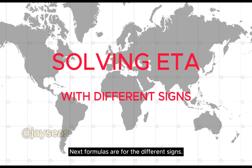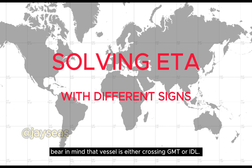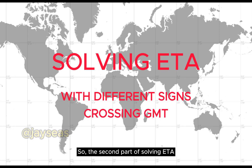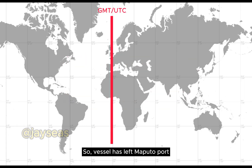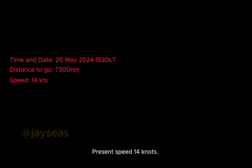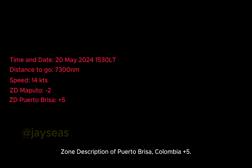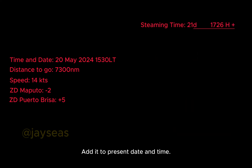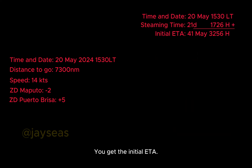Next, formulas for different signs. When dealing with different ZDs, the vessel is either crossing GMT or the IDL. The second part is solving ETA with different signs crossing GMT. The vessel has left Maputo and is now bound for Puerto Brisa, Colombia. Present date and time: 20th of May 2024, 1530 local time. Distance to go: 7,300 nautical miles. Present speed: 14 knots. Zone description of Maputo: minus 2. Zone description of Puerto Brisa, Colombia: plus 5. Same procedure: get steaming time, add to present date and time to get initial ETA.